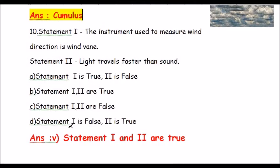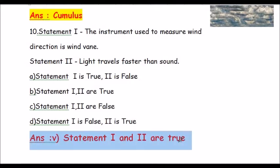Question number 10: Statement one — the instrument used to measure wind direction is a wind vane. Statement two — light travels faster than sound. Options: a) statement one true, two false; b) both true; c) both false; d) one false, two true. The answer is b — both statements are true. A wind vane measures wind direction, and light does travel faster than sound.